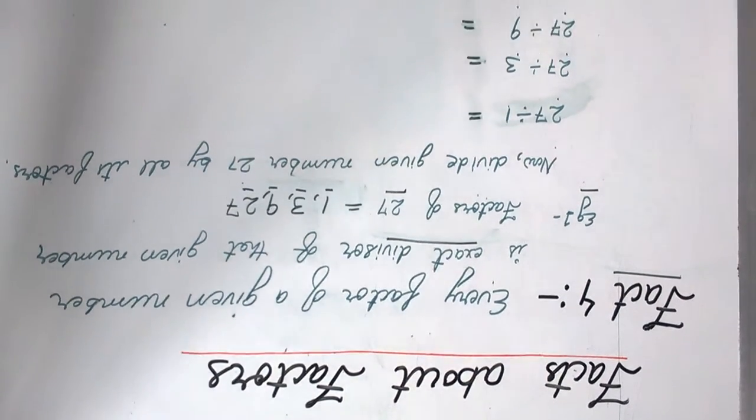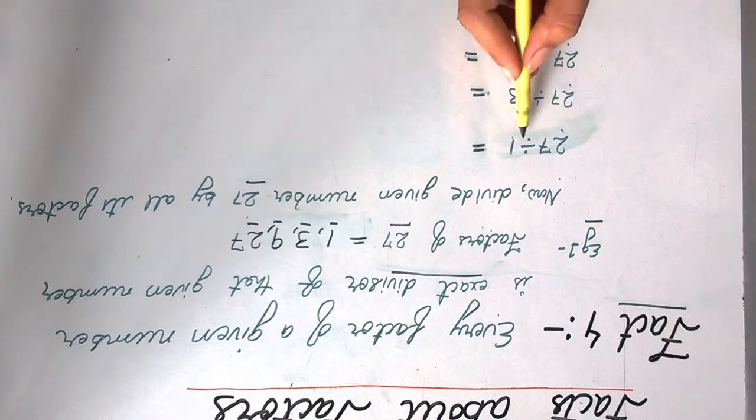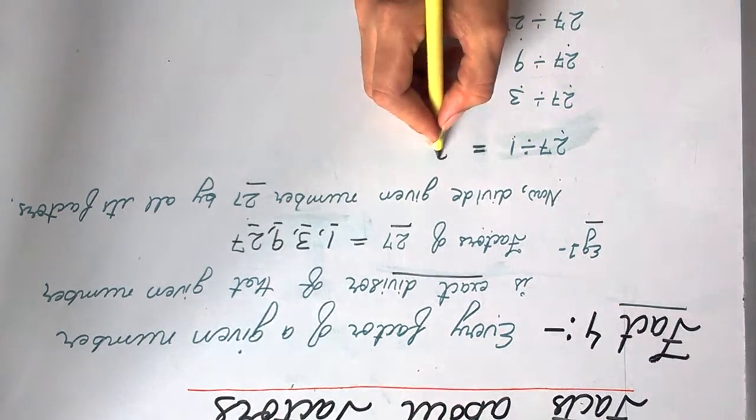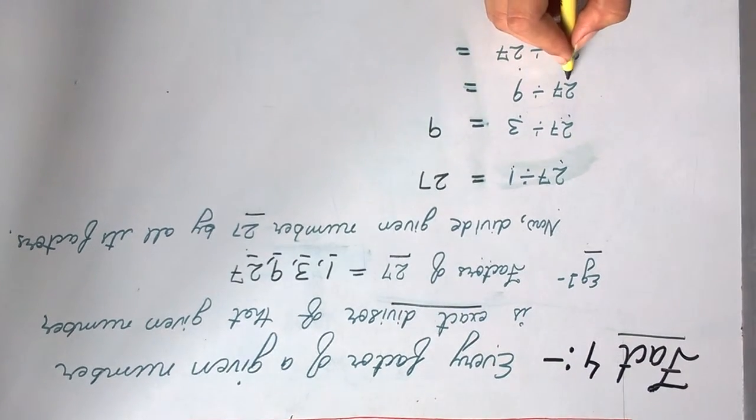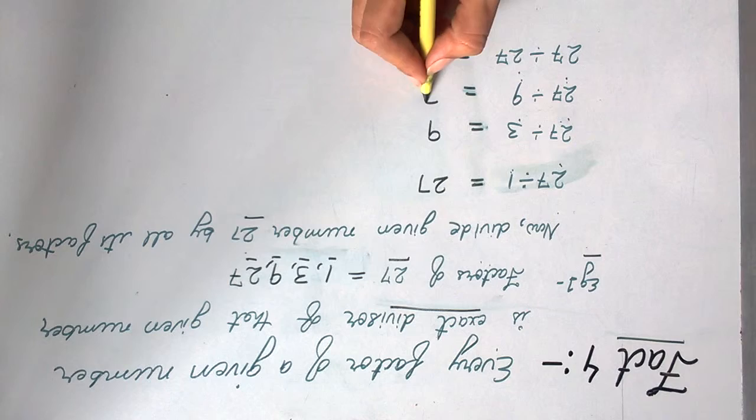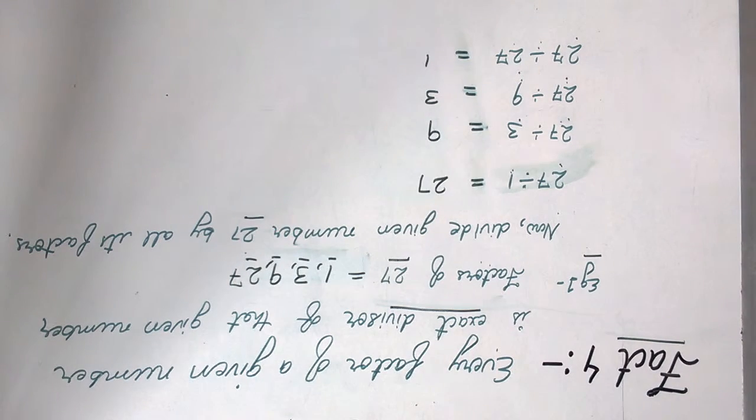Now, divide the given number 27 by all its factors. 27 divided by 1 equals 27. 27 divided by 3 equals 9 and 27 divided by 9 is 3.